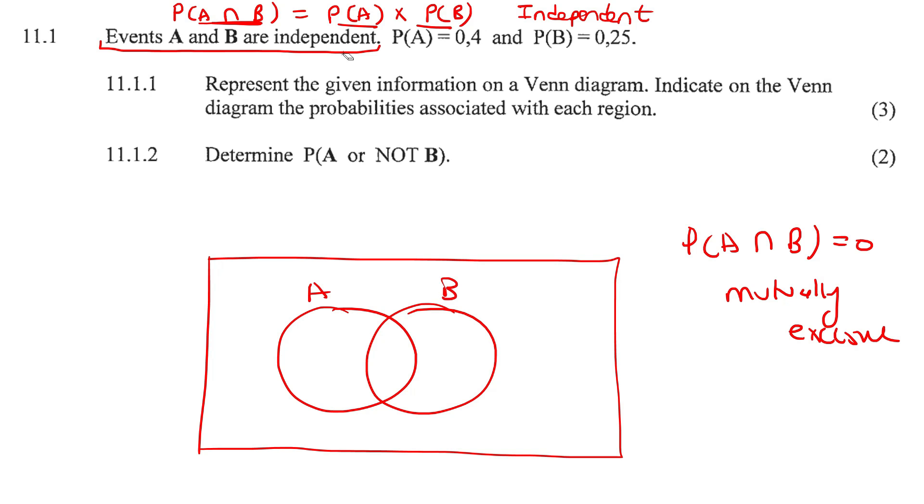Now what a lot of learners do wrong is they say, oh, probability of A is 0.4, and then they go put 0.4 here. Not correct. When they say probability of A is 0.4, they are talking about the entire probability of A, and the same with B.